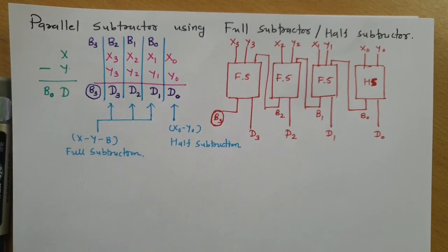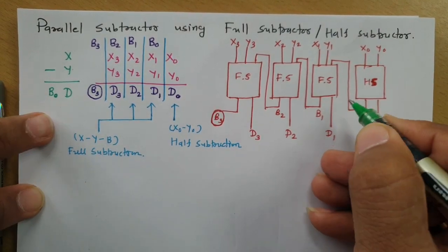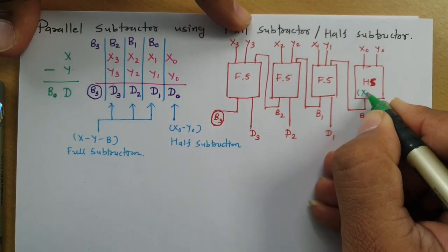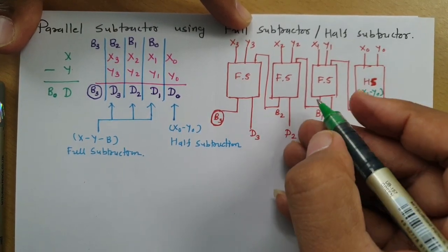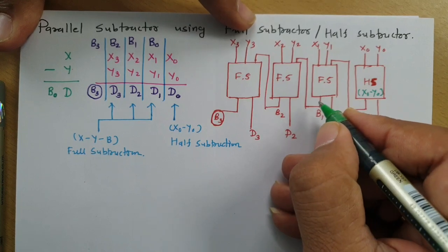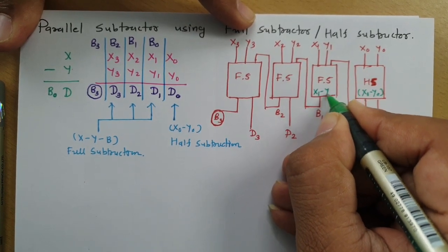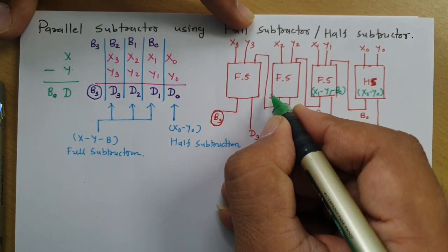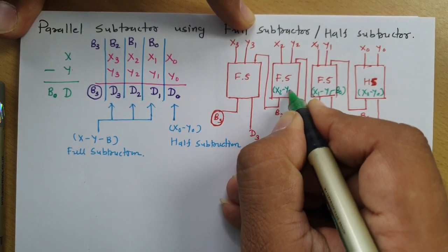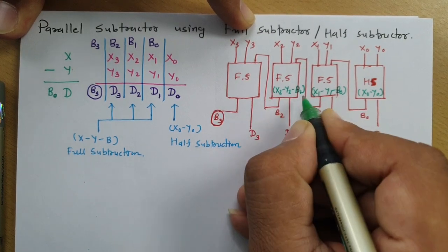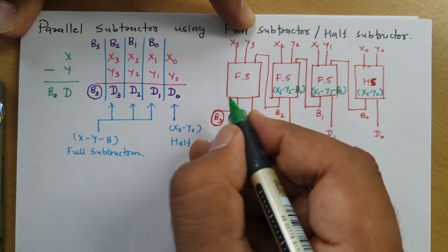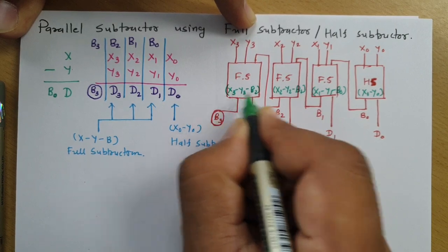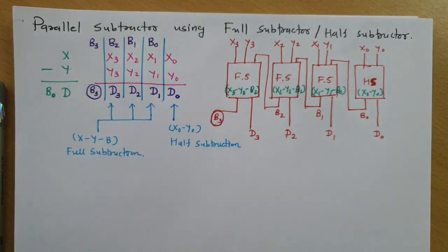By this half subtractor we perform X0 minus Y0. By the first full subtractor we perform X1 minus Y1 minus B0. By the second full subtractor we perform X2 minus Y2 minus B1. And with the third full subtractor we perform X3 minus Y3 minus B2. This is what we perform using these full subtractors.